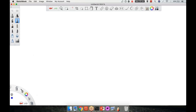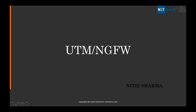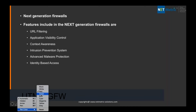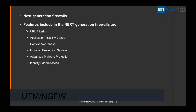That's where Palo Alto started gaining market. Let me talk about what UTM is first, and then how Cisco entered the next-generation firewall market. What is the next-generation firewall? Next-generation firewalls are firewalls which include URL filtering, application visibility and control, context awareness, IPS, advanced malware protection, and identity-based access. All these features comprise one device with one operating system, one GUI managing everything. That is what we call a next-generation firewall.